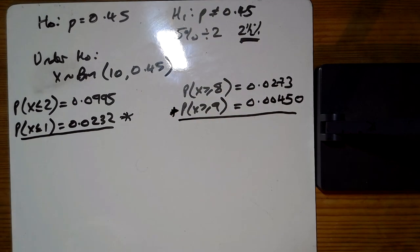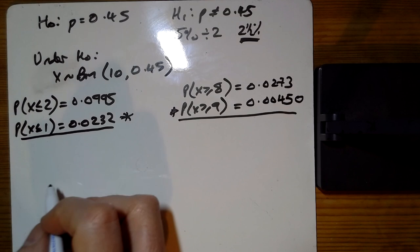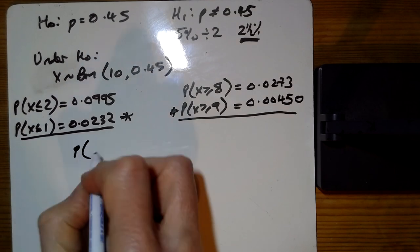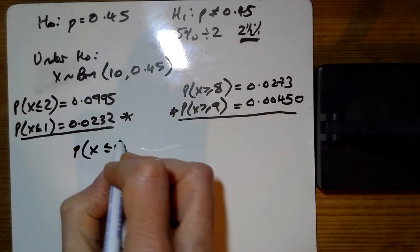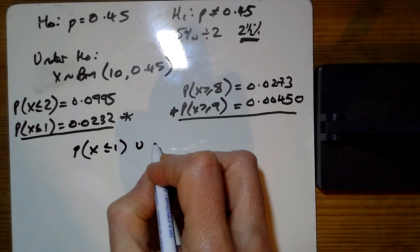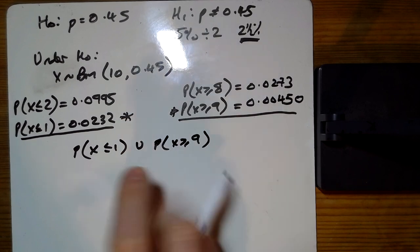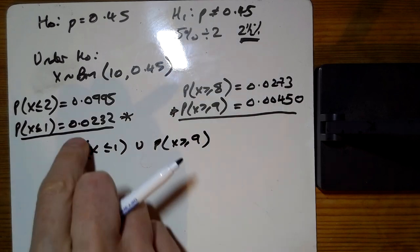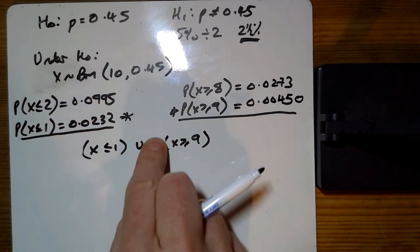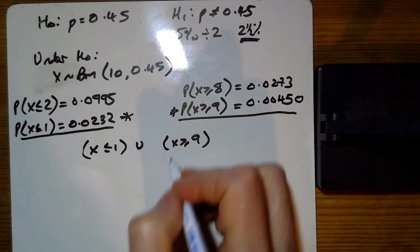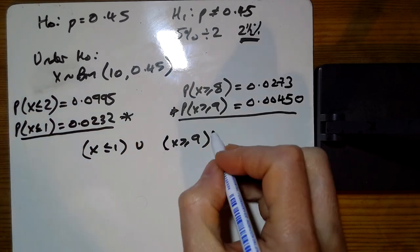So just answering part A, the critical region is X is less than or equal to 1 union with X is greater than or equal to 9. I know that - oh no, I've put probabilities there, can't have probabilities there, sorry about that.